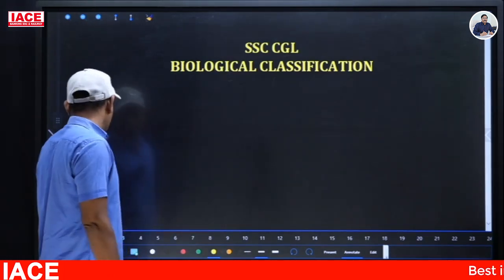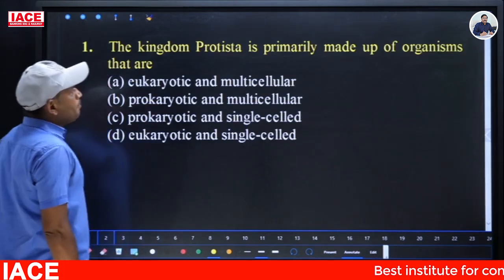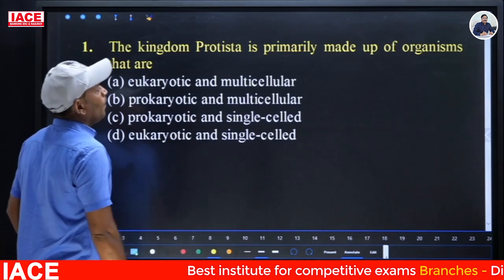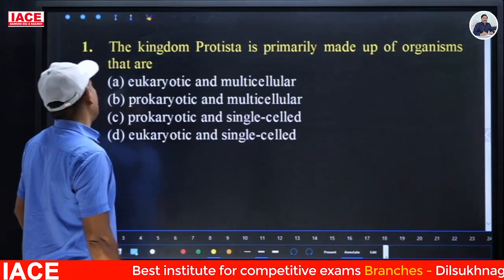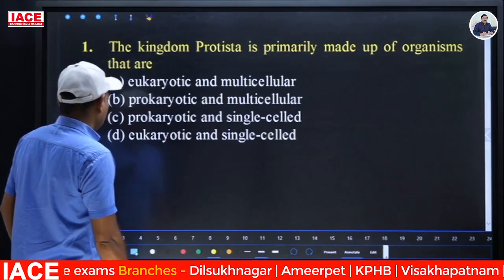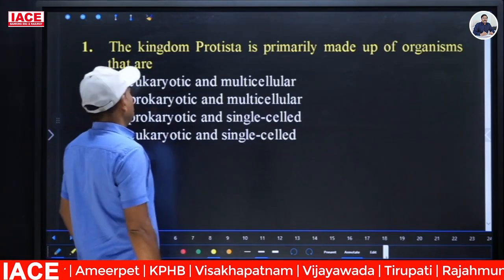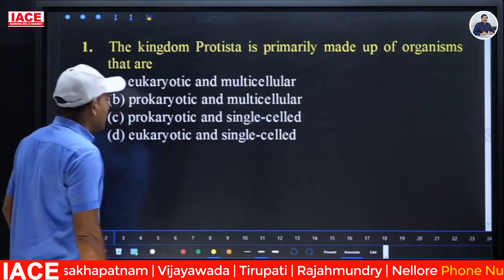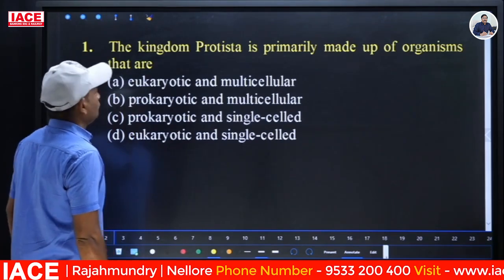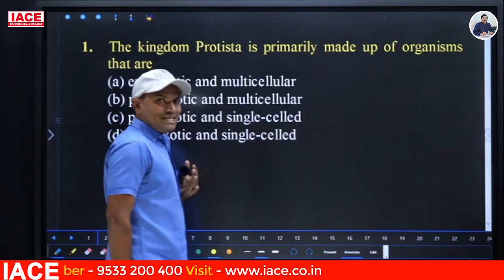Here comes your first question. The kingdom Protista is primarily made up of organisms that are: (A) eukaryotic and multicellular, (B) prokaryotic and multicellular, (C) prokaryotic and single cell, (D) eukaryotic and single cell. When we come to the Protista...